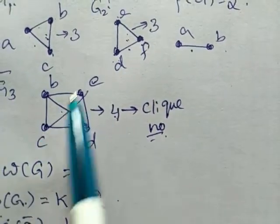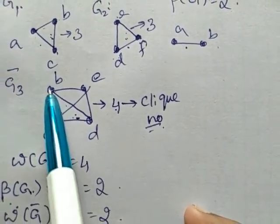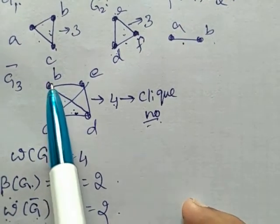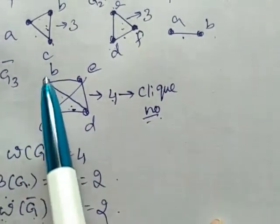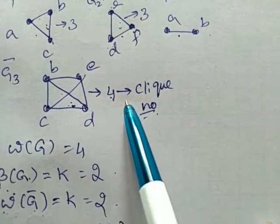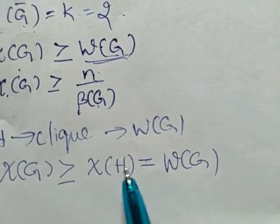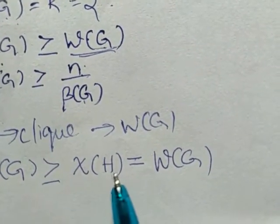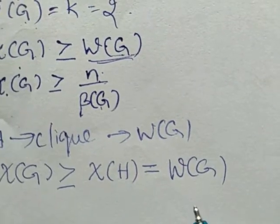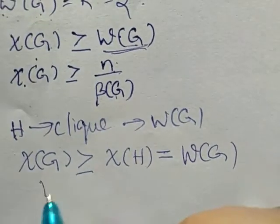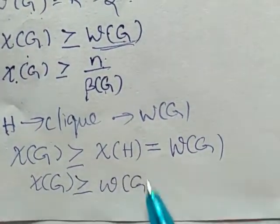In a complete graph every vertex is adjacent to each other, so whatever color we choose for B should not be the same as for A, E, and D. Therefore when we color this graph the number of colors required is 4, which equals the clique number. H is a complete graph, so the number of colors required to color it equals the number of vertices of H, which is ω(G). We can conclude that χ(G) ≥ ω(G).